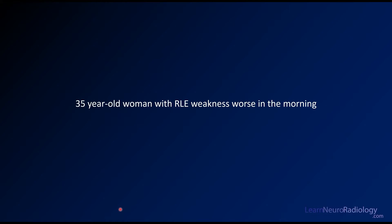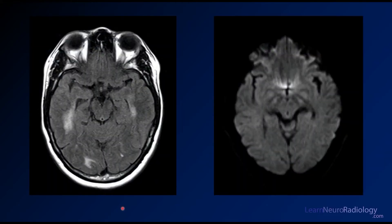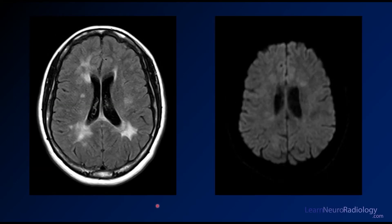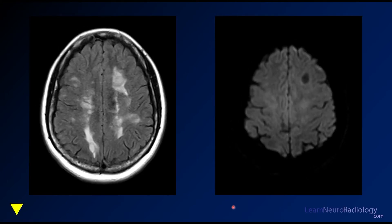The first case is a 35-year-old woman with right lower extremity weakness. You have FLAIR on the left and diffusion on the right. What you're seeing is some periventricular white matter FLAIR abnormalities. It's a little bit faintly bright on DWI, but nothing too much to worry about. If you keep going a little bit higher, you see a little bit more of the same. By now you should really be having some thoughts about what you think this is, especially in the context of this lecture.